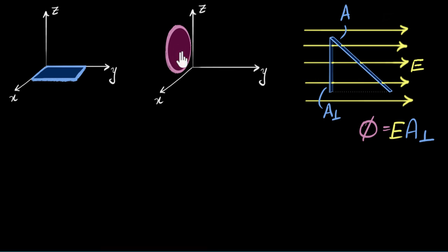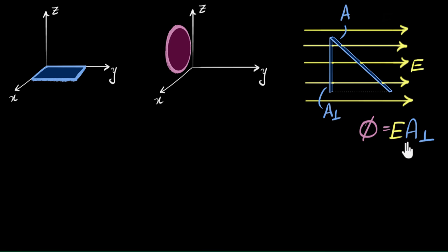The whole idea behind making area a vector — or at least one of the reasons — is to make this communication easier, simpler. That's the whole idea behind maths, right? That's why we use equations and symbols, to use as few words as possible. And making area a vector will actually help us.